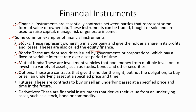Options are contracts that give the holder the right, but not the obligation, to buy or sell an underlying asset at a specified price and time. Futures are contracts to buy or sell an underlying asset at a specified price and time in the future. We discussed options and futures in greater detail under hedging. Derivatives are financial instruments that derive their value from an underlying asset, such as a stock, bond, or commodity.